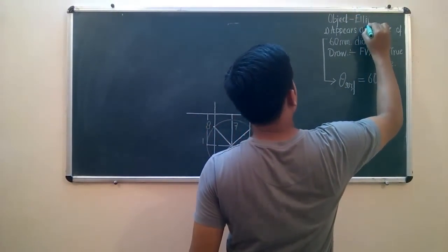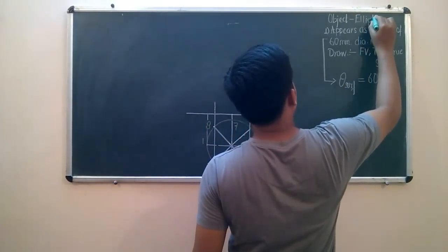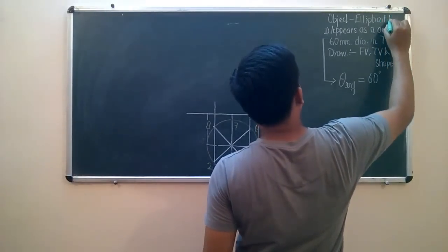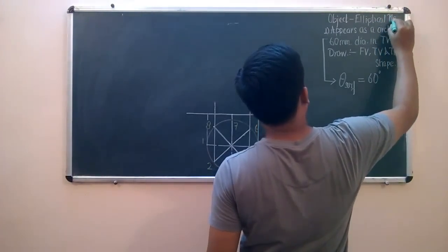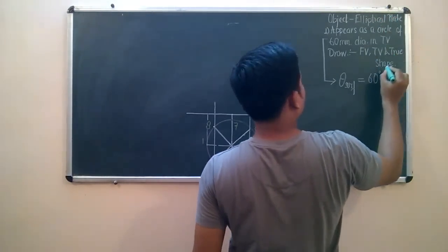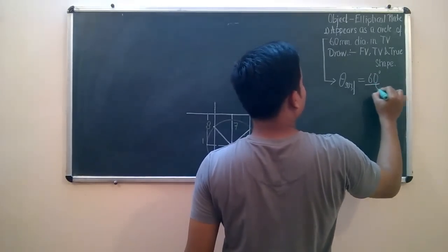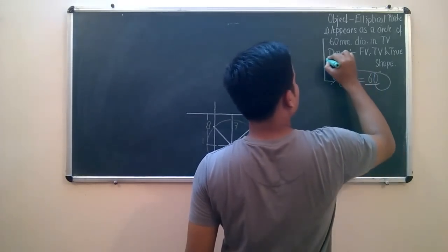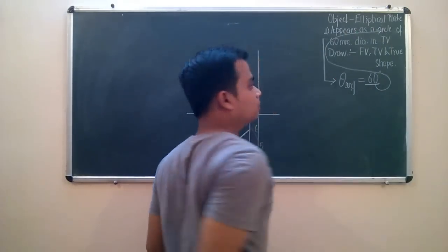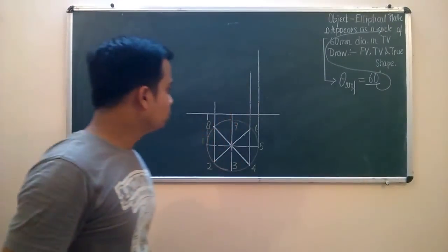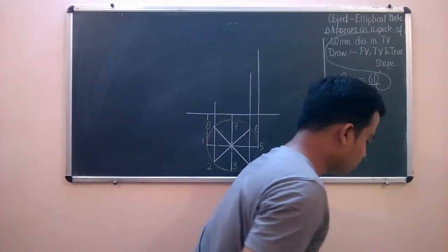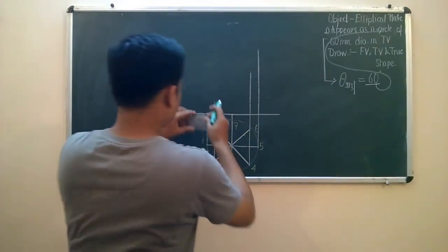So this object is nothing but an elliptical plate — an elliptical plate which at an angle of 60 degrees looks like a circle. So let us do this and make this 60 degree angle.